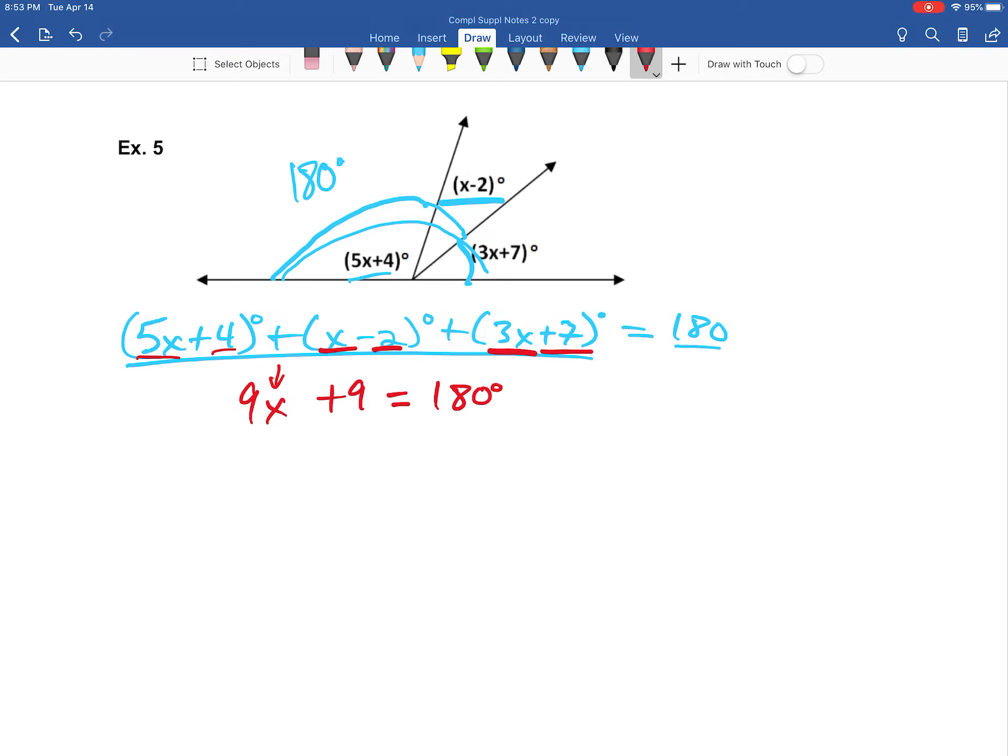And then our goal here is to go ahead and solve for x. So to accomplish that, what we're going to do is subtract 9 from both sides. Here our 9s are going to cancel, and when we do that, we end up with our 9x equals 171. Now, we're going to go ahead and divide that coefficient 9 on both sides. So 9s are going to cancel with one another, leaving us our x equals. Now, 171 divided by 9 is going to come out to be cleanly 19.